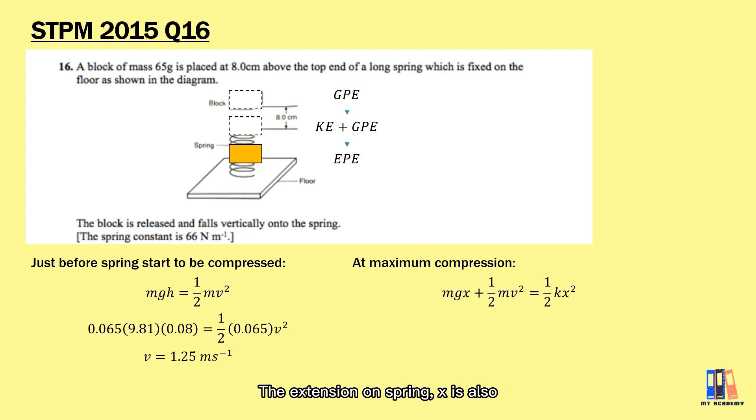The extension of spring x is also the reduction in the height of object. So apply the energy conservation that mgx + ½mv² = ½kx². Or we can also use the formula mg(h + x) on the left hand side of the equation. Solving these equations will give you the compression of the spring equal to 0.05 meter.